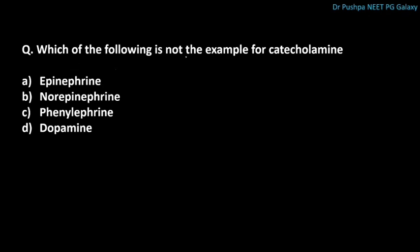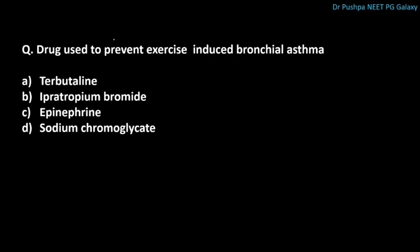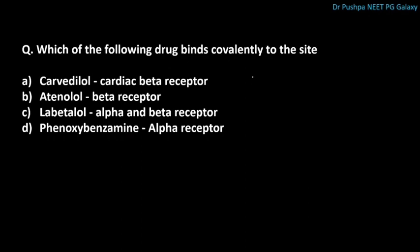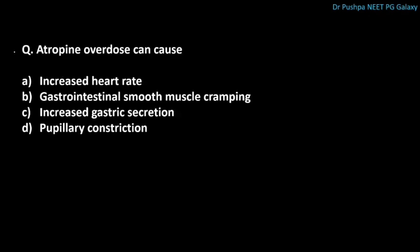Which of the following is not an example of a catecholamine? The correct answer is phenylephrine. The drug used to prevent exercise-induced bronchial asthma is sodium cromoglycate. Which drug binds covalently to the receptor site? The correct answer is phenoxybenzamine, which binds to the alpha receptor. Atropine overdose causes increased heart rate.